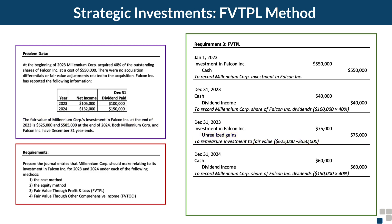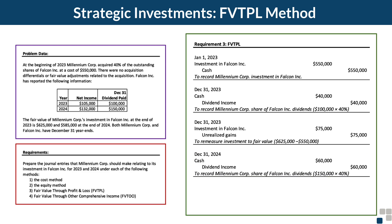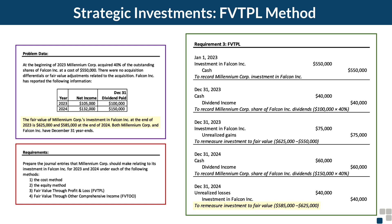On December 31st, 2024, we again have Falcon's $150,000 dividend. Millennium records 40%, or $60,000, with a debit to cash and a credit to dividend income. Then at the end of 2024 comes another remeasurement. The fair value is $585,000 and the previous remeasured value was $625,000, representing a $40,000 unrealized loss. The journal entry is a debit to unrealized loss and a credit to the investment account for $40,000.